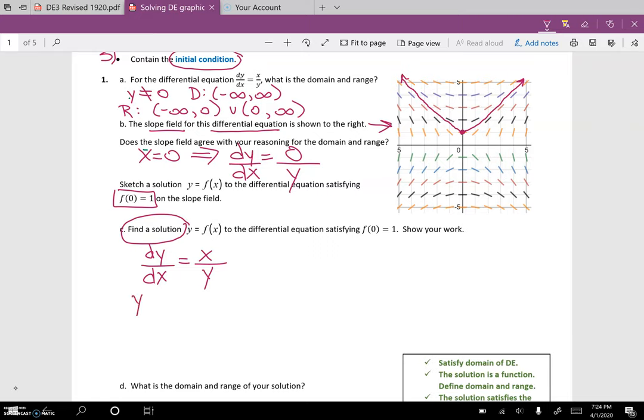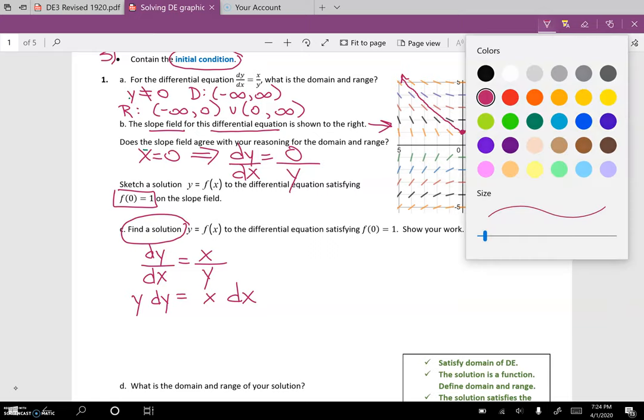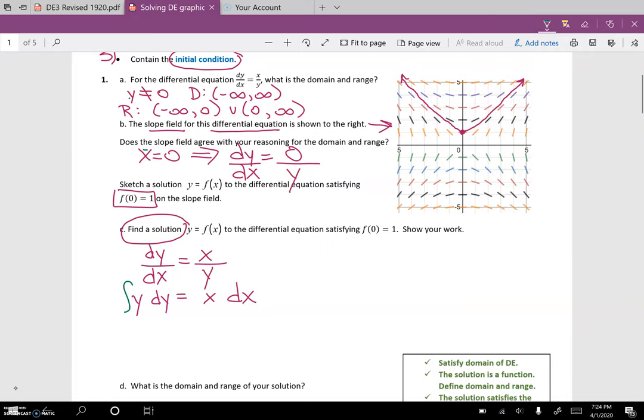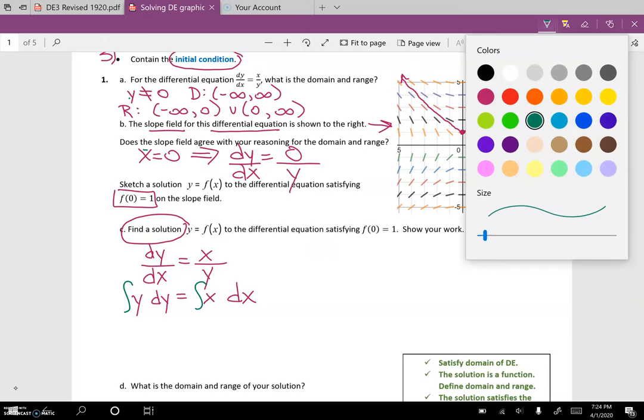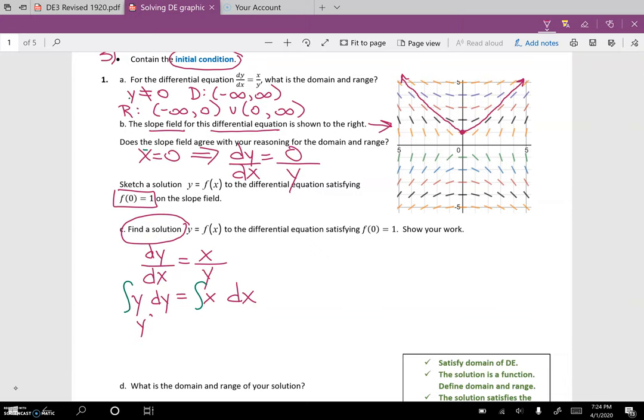I'm going to move the y over, so I have y dy = x dx. If this was an FRQ, you get one point just for doing that. Now we're going to integrate both sides. The integral of y is y²/2, and the integral of x is x²/2. You get one point each for each integration. Now we add a c, and you get another point if you add a c.